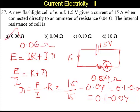So the answer is A, 0.06 ohms. That is 0.1 minus 0.04 ohms. The correct answer is A.